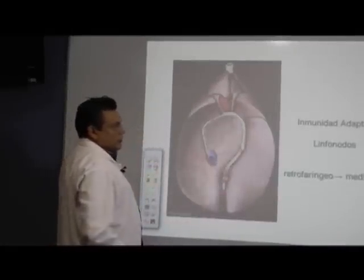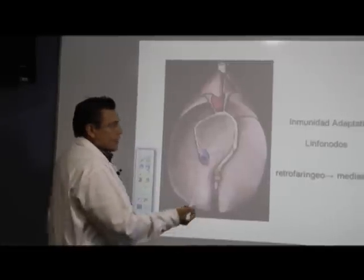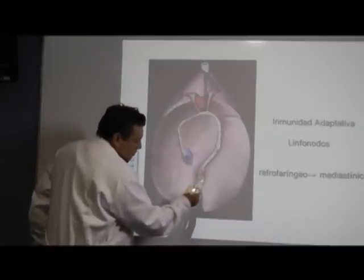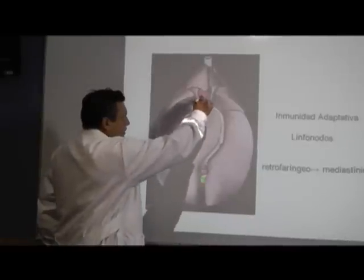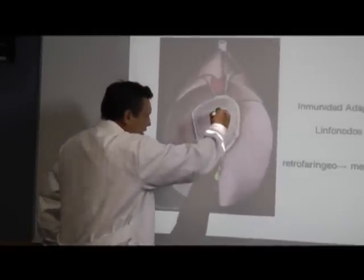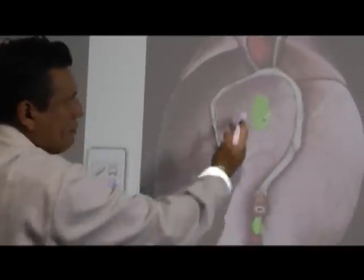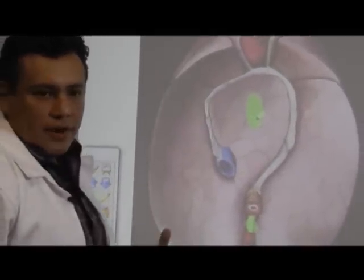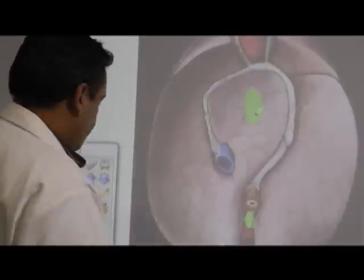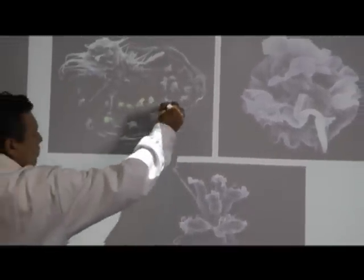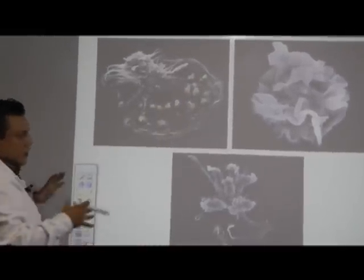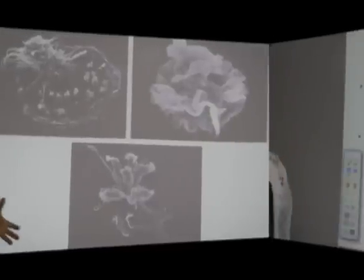Cercano a estos pulmones, como parte de esa inmunidad adaptativa, están los linfonodos mediastínicos, adyacentes al corazón y entre ambos pulmones en la parte medial, de ahí el nombre de linfonodos mediastínicos. Aquí estamos viendo imágenes de microscopía electrónica de barrido de diferentes macrófagos que han fagocitado o están en el proceso de fagocitosis de patógenos en estos tejidos linfoides o en la pared alveolar.